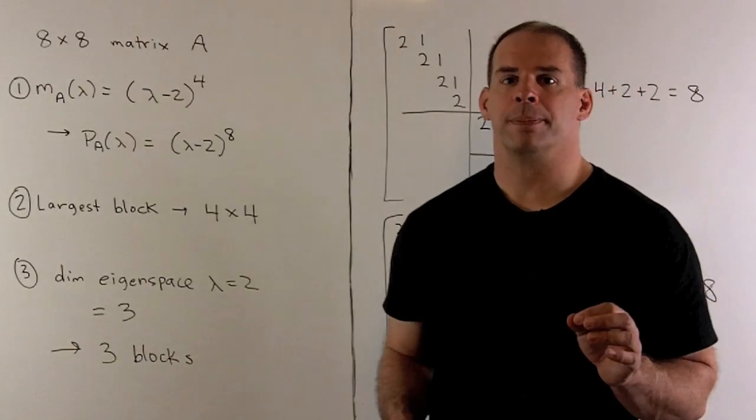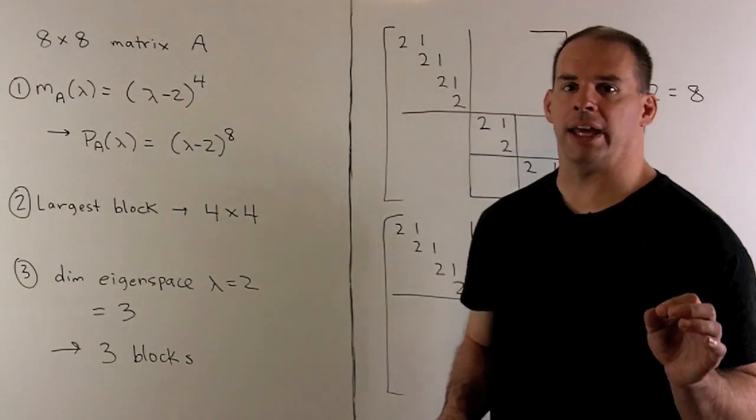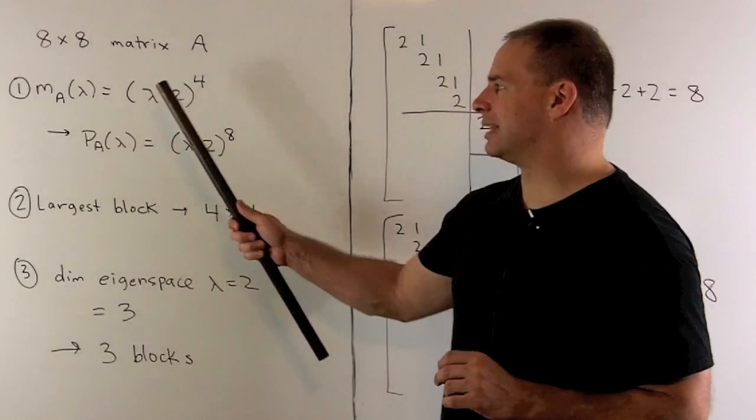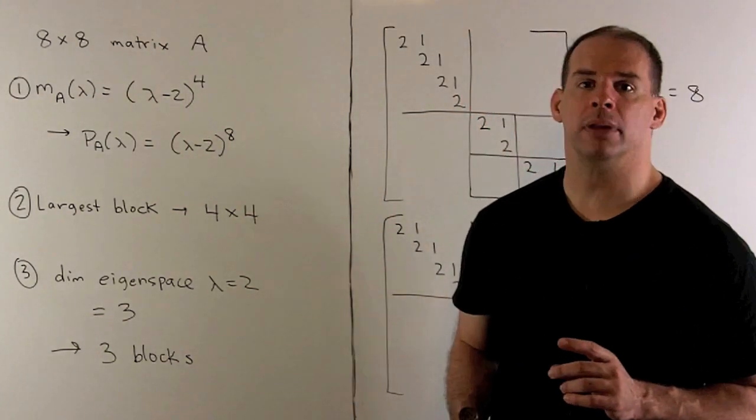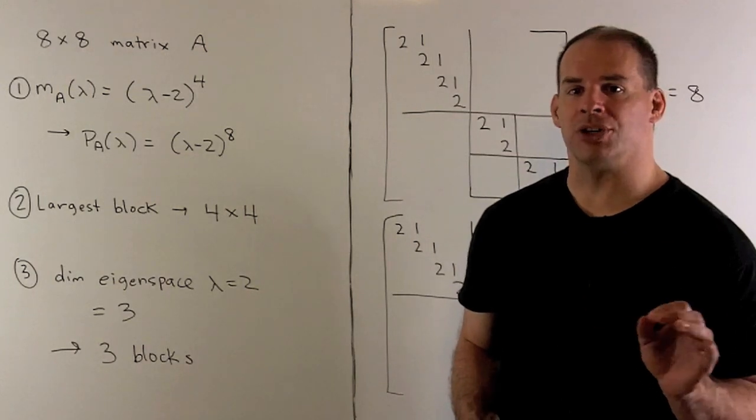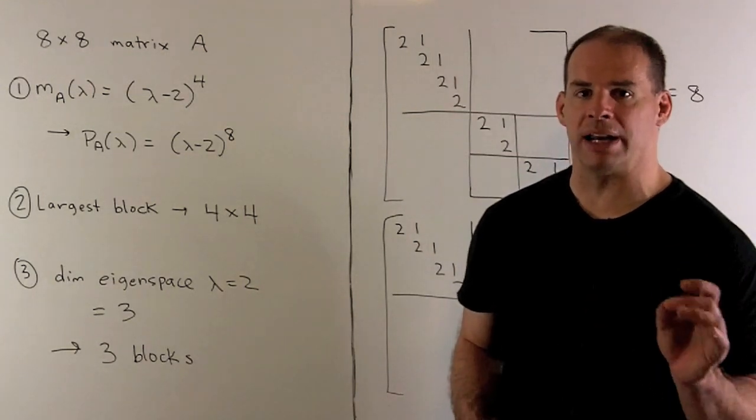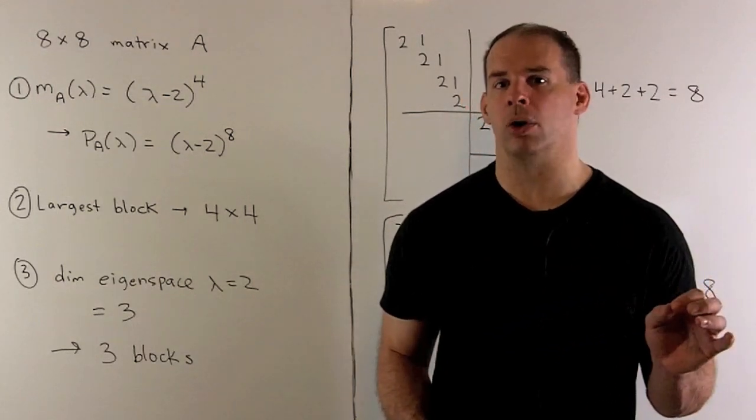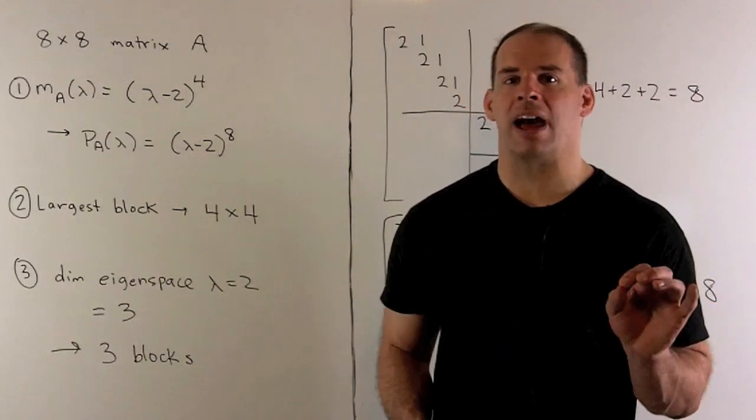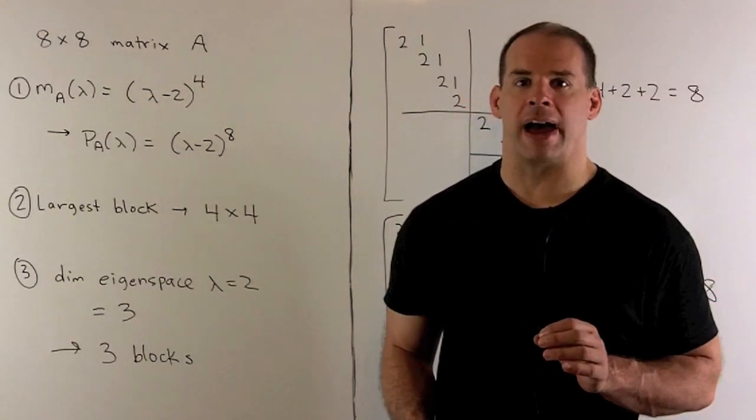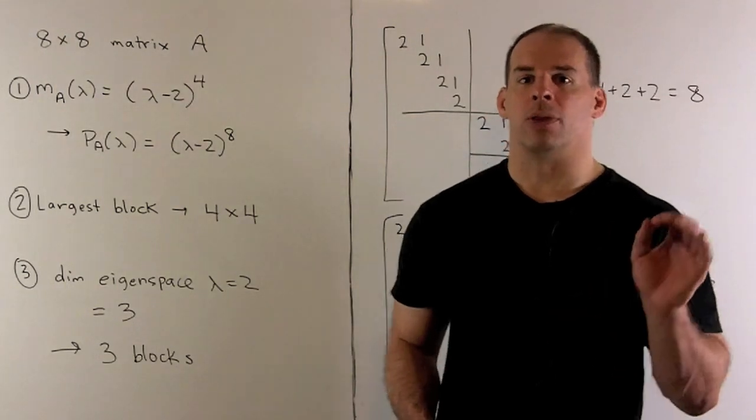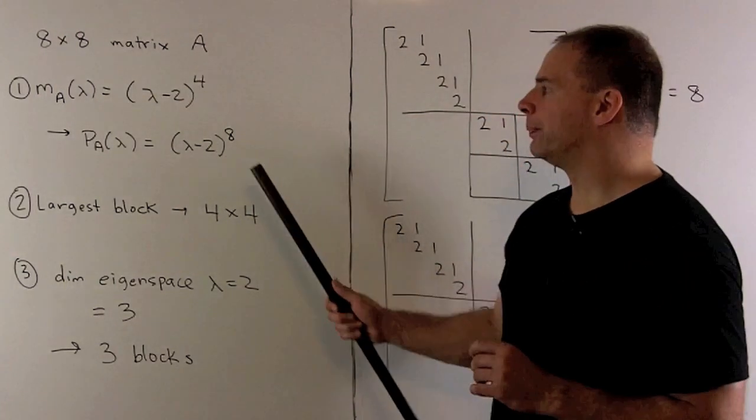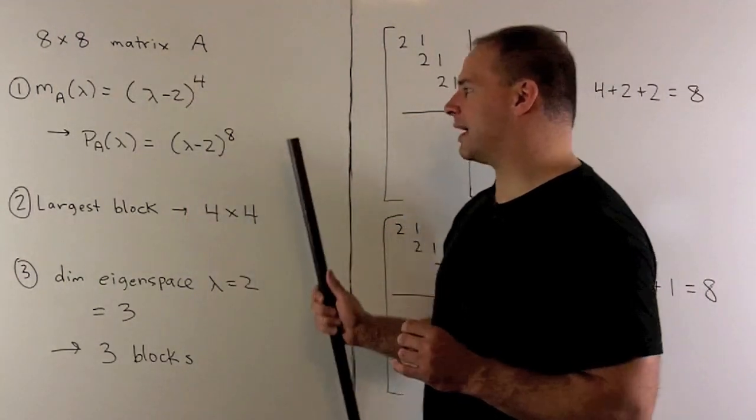In our special case, we have an eight-by-eight matrix A. The minimal polynomial is lambda minus two to the fourth power. The only factor that appears in the characteristic polynomial is lambda minus two. We'll go from the characteristic polynomial to the minimal polynomial. The degree can come down, but we don't lose any irreducible factors. So the only factor is going to be lambda minus two, and by the size of the matrix, we have to have exponent eight.